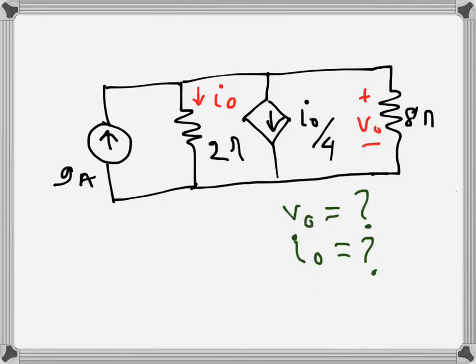For this problem we have to find v_naught and i_naught. We can see i_naught is the current through the 2-ohm resistor branch, and v_naught is the voltage across this 8-ohm resistance.